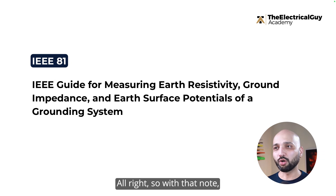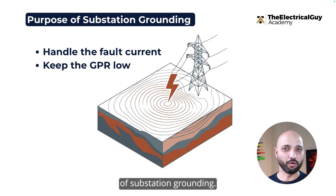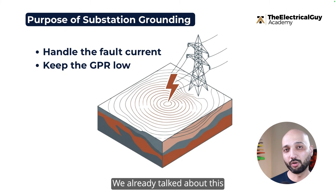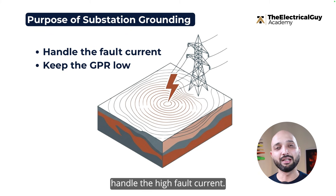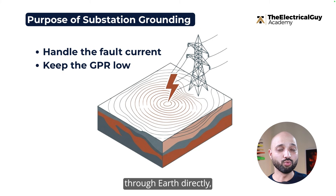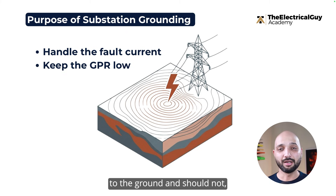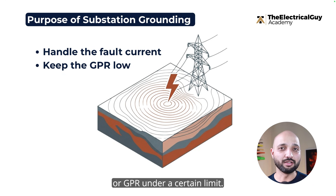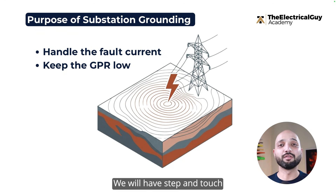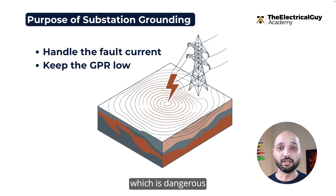Let's first understand the purpose of substation grounding. The first and most important purpose is that it should handle high fault current. When a ground fault occurs, it should go through the earth directly, and even when lightning happens it should go directly to the ground and should not enter any living being.